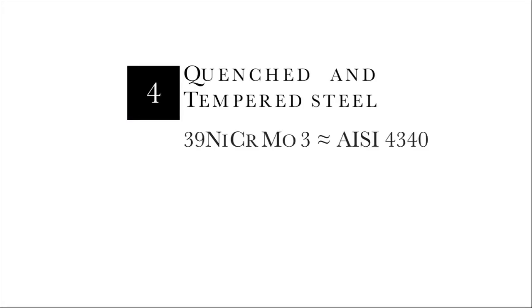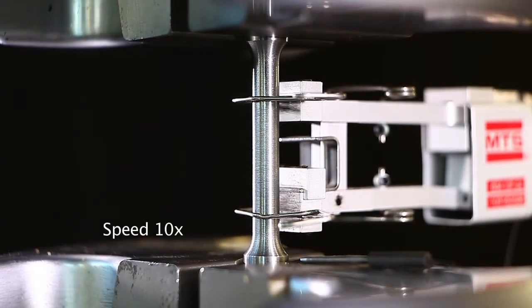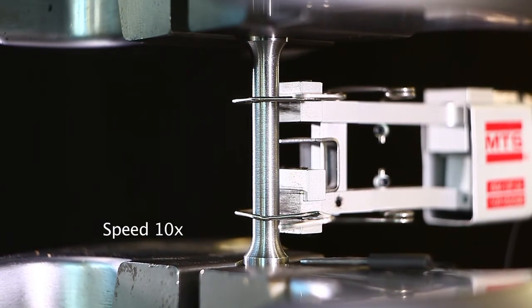Test 4: Quenched and tempered steel. These steels can have an optimal trade-off between strength and ductility.